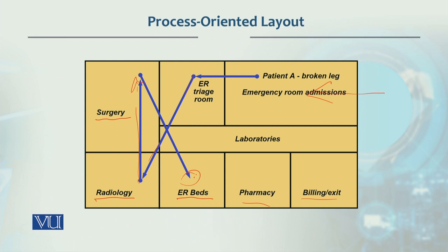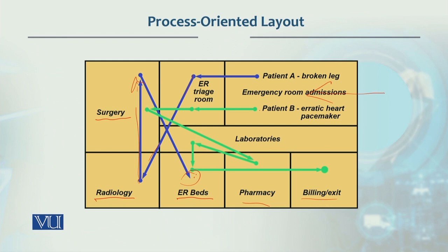After some time they are shifted to another place. Then comes Patient B with an erratic heart pacemaker — the pacemaker implanted in the heart starts causing problems. They come to emergency, are taken to the ER triage room, surgery is performed to fix the pacemaker, then medicines are collected from the pharmacy, lab tests are done, the patient rests in the ER bed for a while, and then makes the billing payment and exits.